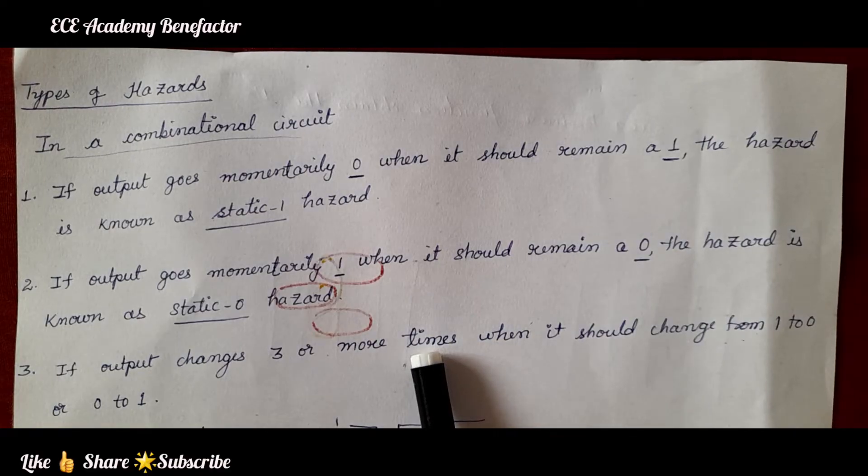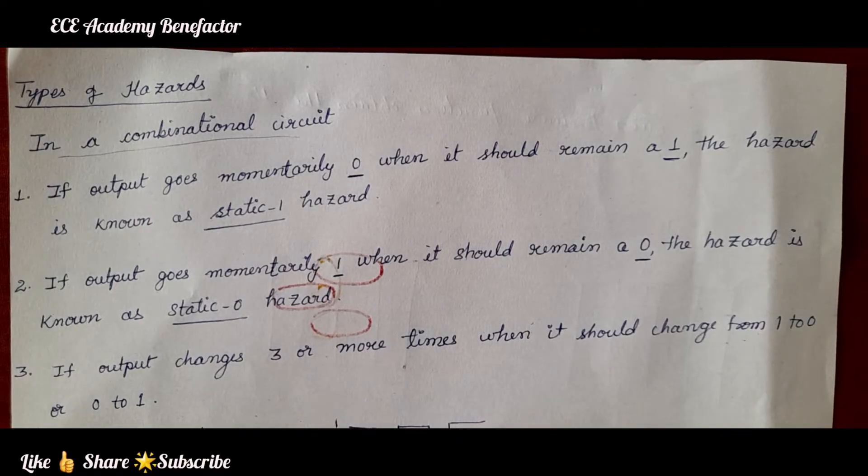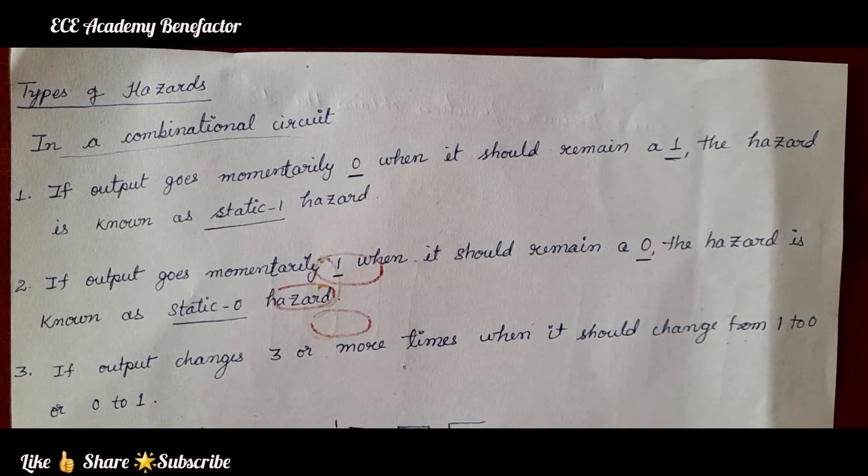In our previous class, we have seen what is hazard and how it is occurring in a combinational circuit and we have understood using a waveform. In this class, we will be seeing what are the different types of hazards and how to make a circuit hazard free.